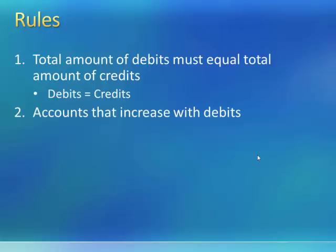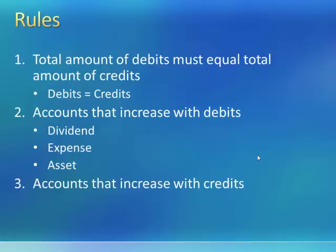The second rule is that we need to understand the accounts that increase with debits. The accounts that increase with debits are dividend, expense, and asset accounts. The third rule determines the accounts that increase with credits.